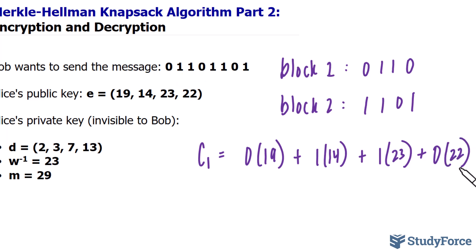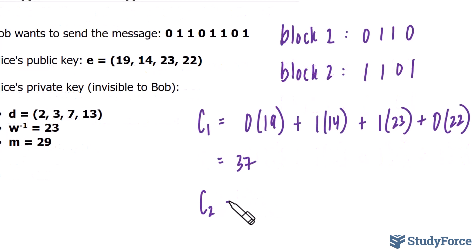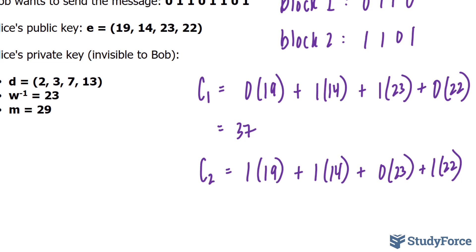Multiplying and adding those together, we get 37. In the second ciphertext, which I'll call C2, we'll do the same thing. But this time, our block consists of 1, we'll multiply that to 19, plus 1 times 14, plus 0 times 23, plus 1 times 22. That amounts to 55.